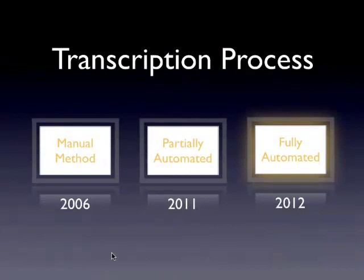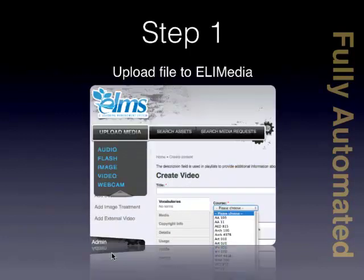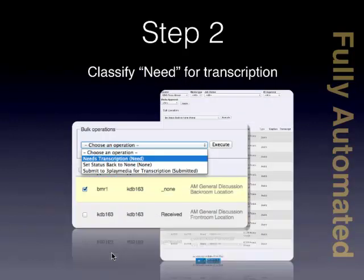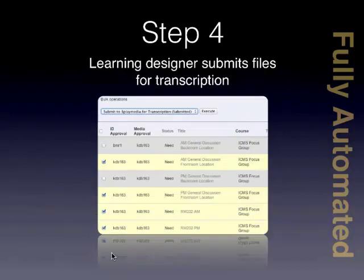We wanted to improve that, so we fully automated the process. Going back to the APIs and the tool sets that come with the 3Play Media system, we utilized those APIs to automate the whole process from top to bottom. Now our media specialist uploads a piece of media into the ELI media system, chooses the course it's associated to, and classifies it as needing transcription. That triggers an event for approval to our instructional designers to say: media is approved for transcription — are you OK with it? Is the faculty member ready? Once approvals occur, we submit it and hit execute to send to 3Play Media's system.